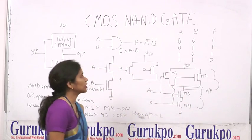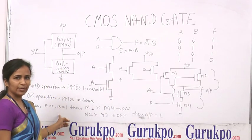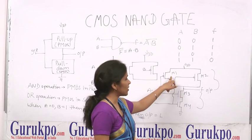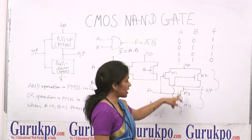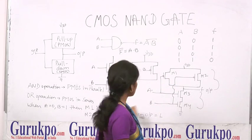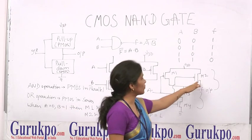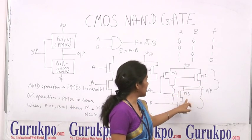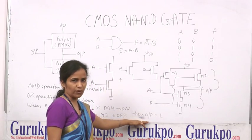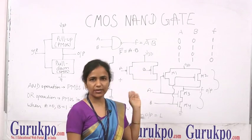To verify the truth table, let's take A=0 and B=1. When A=0, transistor M1 is on and M4 is also on, so we get the output close to 1. In this way, we can continuously prove all the entries of the truth table.